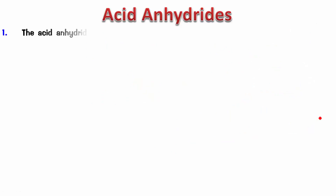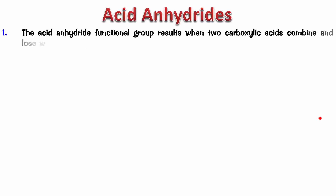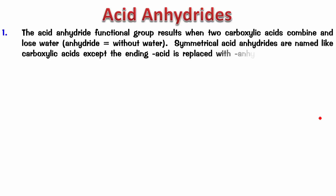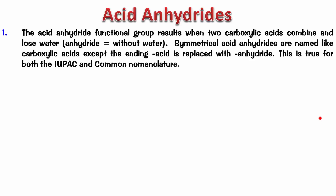To summarize: the acid anhydride functional group results when two carboxylic acids combine and lose water. Symmetrical acid anhydrides are named like carboxylic acids except the ending 'acid' is replaced by the word 'anhydride'. This is true for both IUPAC and common nomenclature.